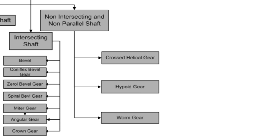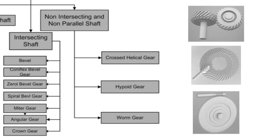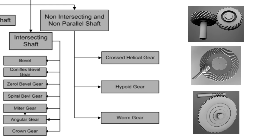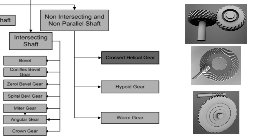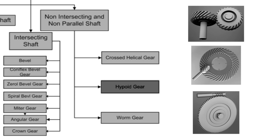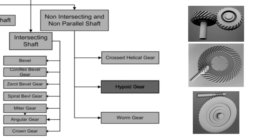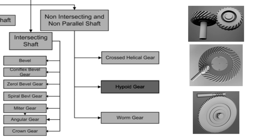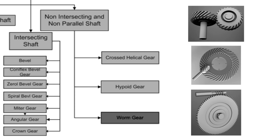Non-intersecting and non-parallel shaft gears are classified into three groups: cross helical gear, hypoid gear, and worm gear.